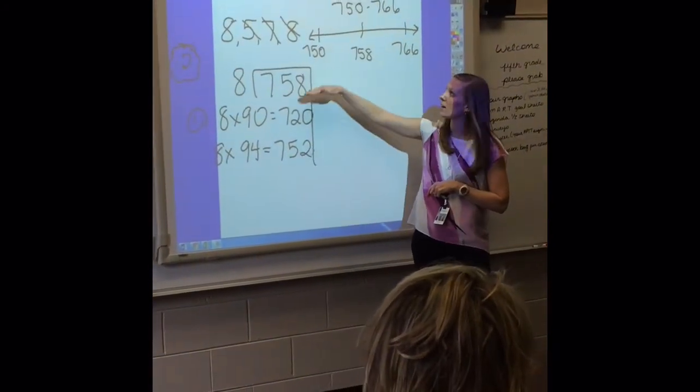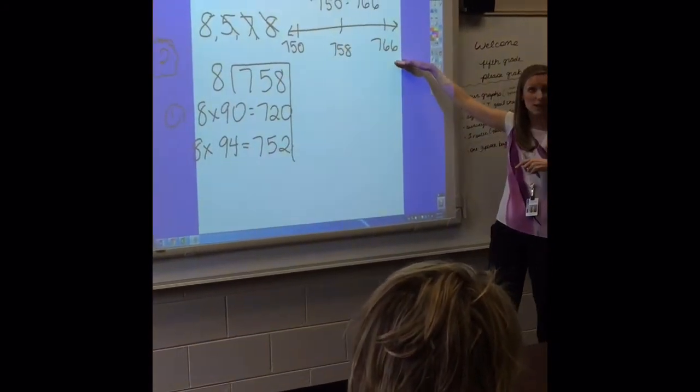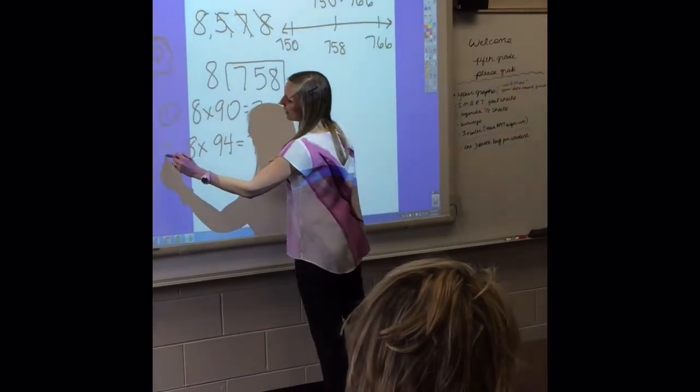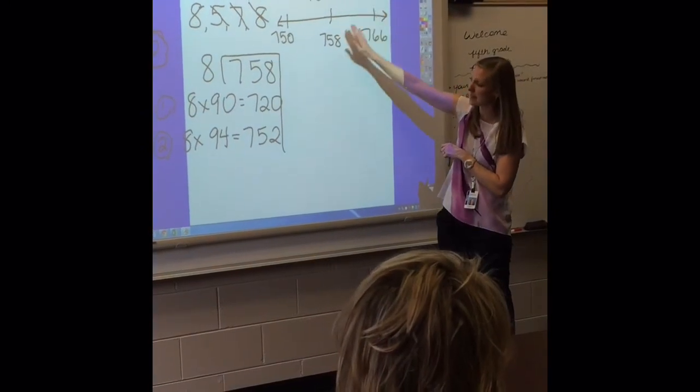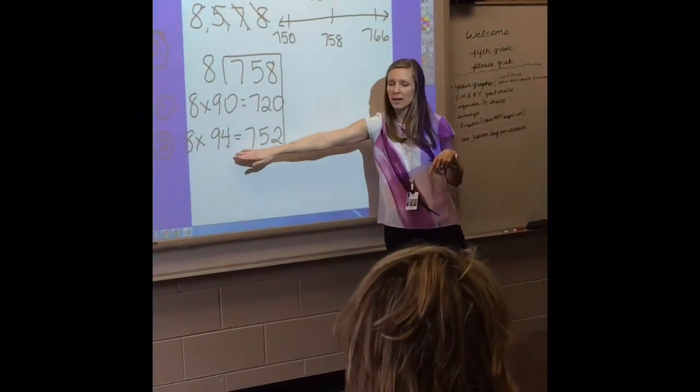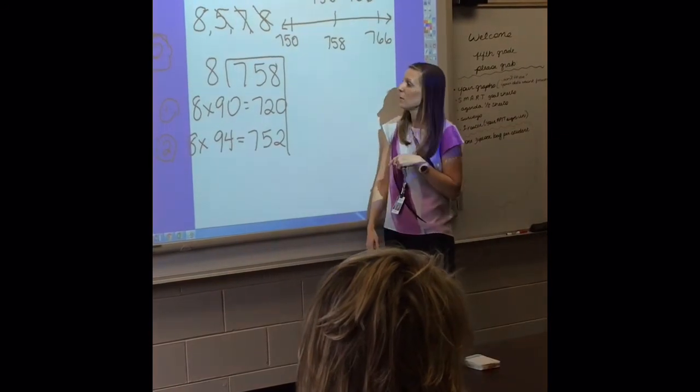Okay. Now looking at our answer and our range, did we hit our target? Yes. We did. We were able to fall within our range from 750 to 766. We got it in the second shot. And what was our quotient for that? 94.